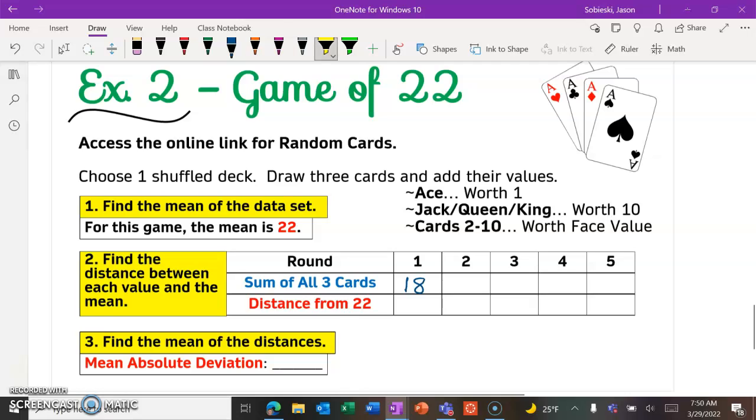And again, the mean they're giving us for this problem is 22. So how far away from 22 is the number 18? Well, it's four away. So that's our distance from 22.